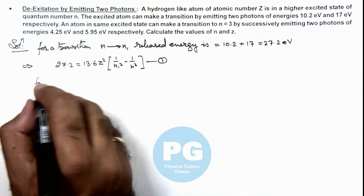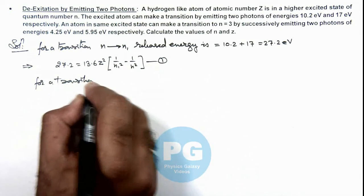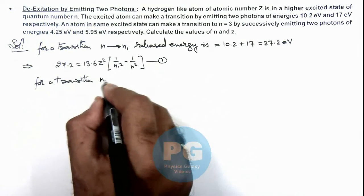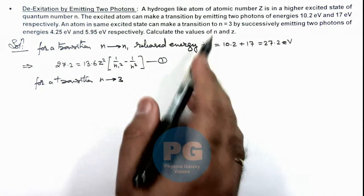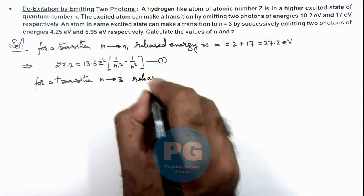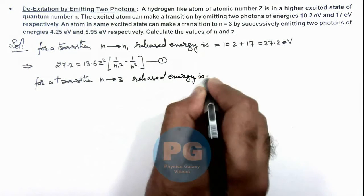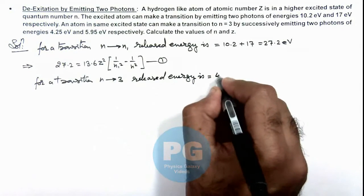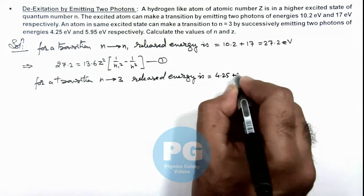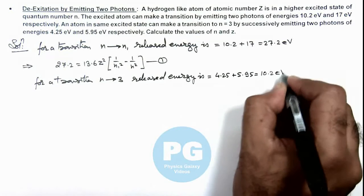And now we can write for a transition n to state 3 in the second case, we can write released energy is this is equal to 4.25 plus 5.95 that is equal to 10.2 electron volt.